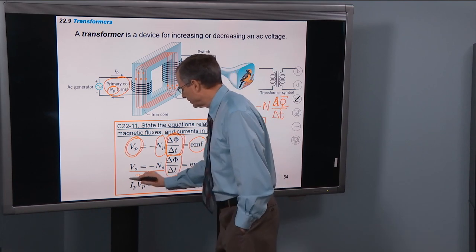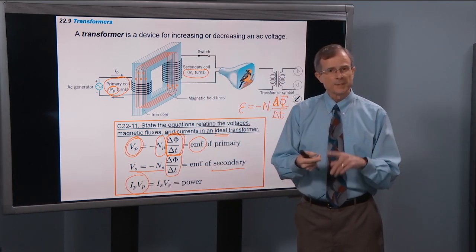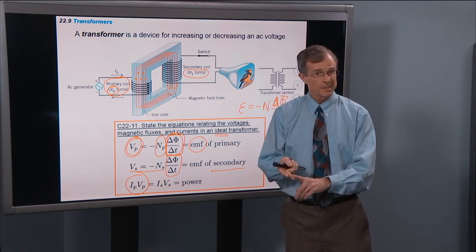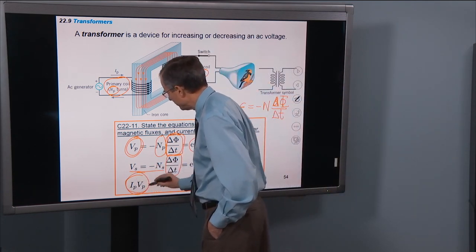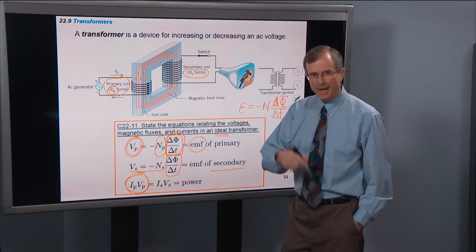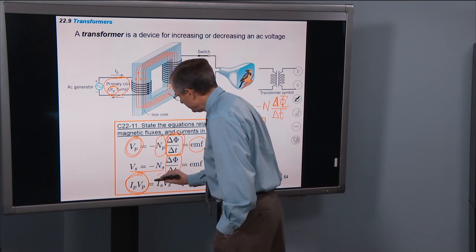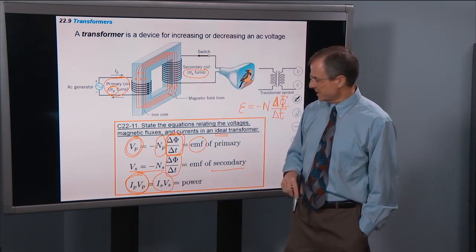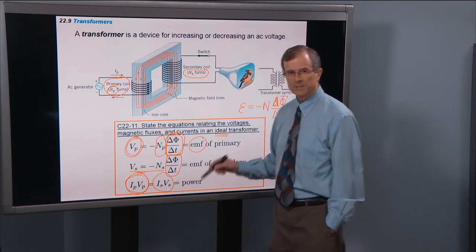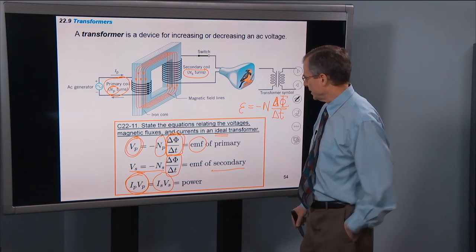And the power, as you'll remember, for any circuit element is the current times the voltage across that element. So, for the power produced by the primary is I primary times voltage primary, and the power received by the secondary is the current in the secondary times the EMF of the secondary. And that's for an ideal transformer.